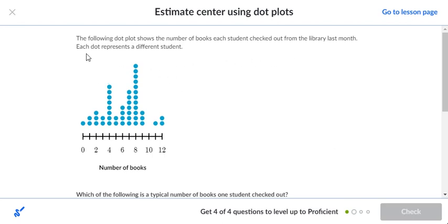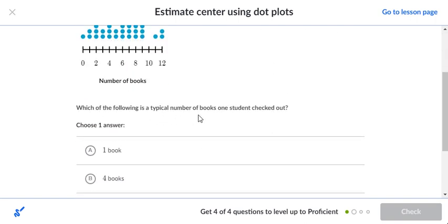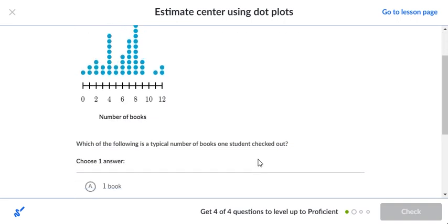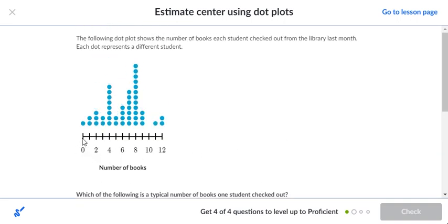Okay, right here is the library book. Each dot represents a different student. Which of the following is the typical number of books for one student checked out? Well this ranges from zero to twelve. So one, two, three, four, five, six, seven, eight, nine, ten, eleven, twelve.